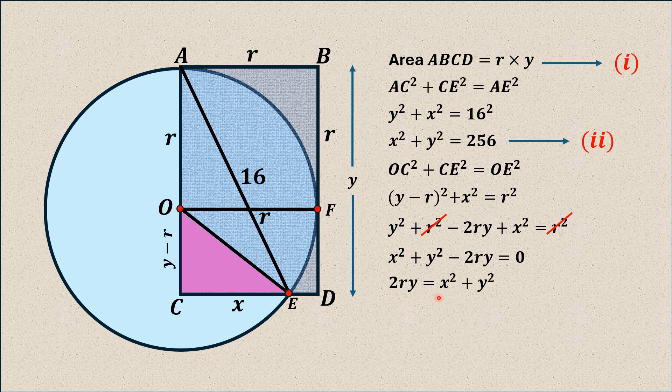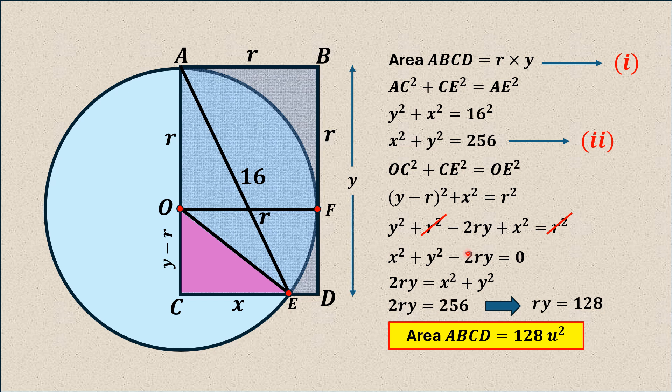2ry = 256. Dividing both sides by two, we will get r × y = 128. And r × y from equation number one is actually the area of rectangle ABCD, which is the required area. So area ABCD = 128 square units.